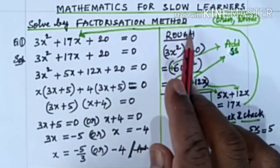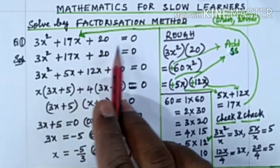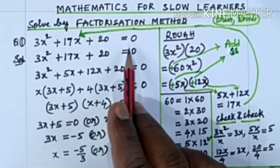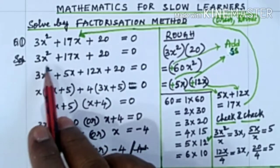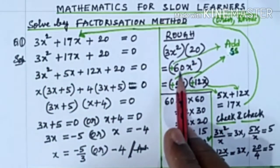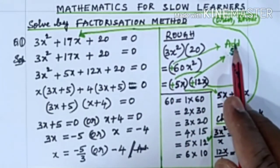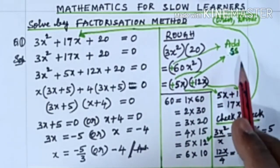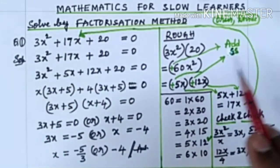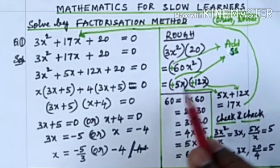Solve by factorization method: 3x² + 17x + 20 = 0. Here we have all positives. First we have to take 3x² and 20. 3x² into 20 is plus 60x². Since we have plus here, we have to add the factors to get the middle term. Similarly, we should write both with the same signs.